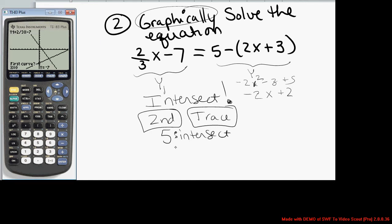It walks you through steps. It asks you, what's the first curve? It already has your cursor sitting on y1. Remember, you can see that in the top left-hand corner. y1 is 2 thirds x minus 7. That's where your cursor is. And it says, is this the first curve? You say yes. You press enter.